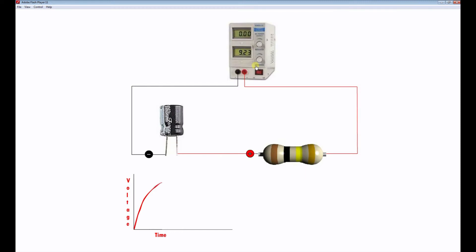We see the voltage across the capacitor in the graph here. The charge is very rapid first of all and then slows down until the capacitor is fully charged.